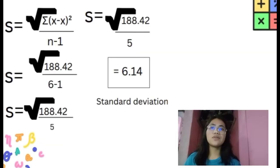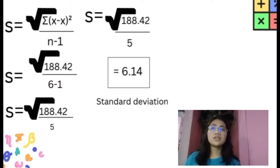Our formula is s equals the square root of the summation of x minus x-bar raised to 2, over n minus 1. Let's substitute: s equals the square root of 188.42 over 6 minus 1. So 6 minus 1 equals 5. 188.42 divided by 5 equals 37.684, and the square root gives us 6.14. So our standard deviation is 6.14.